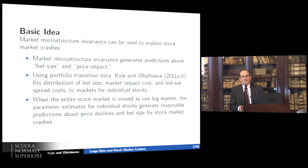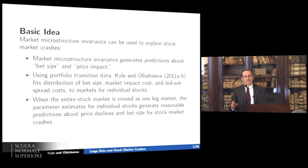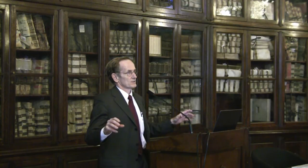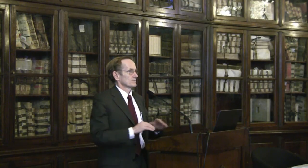We recently heard about a large bet taken by a trader at J.P. Morgan that destabilized that bank — that's exactly what we mean by a bet. We're going to use data on routine trades in U.S. stocks, mostly by long-only investors. We'll look at 400,000 portfolio transition trades to see if the principles of market microstructure invariance apply across a universe of American stocks.